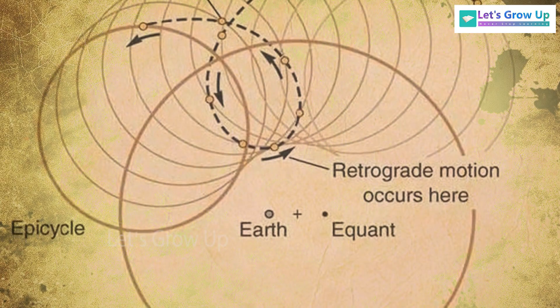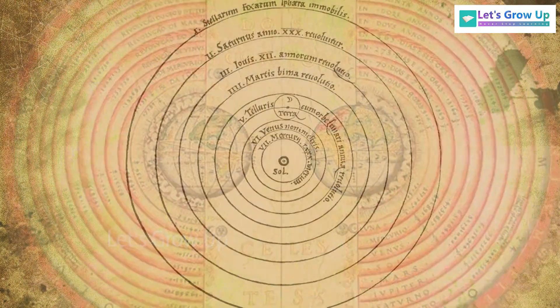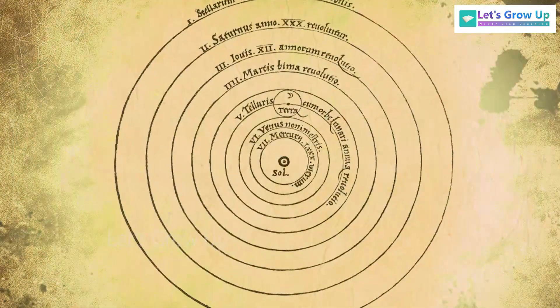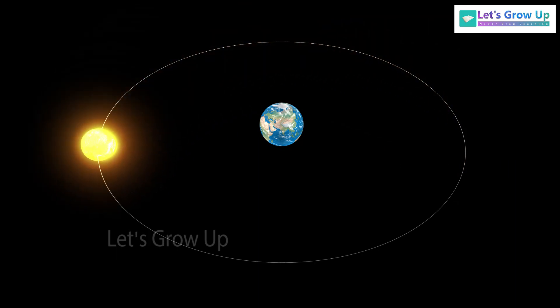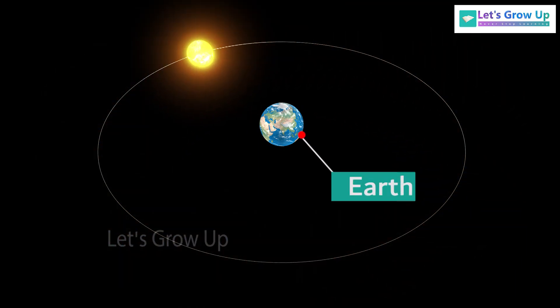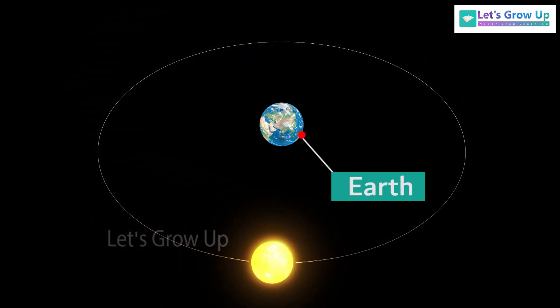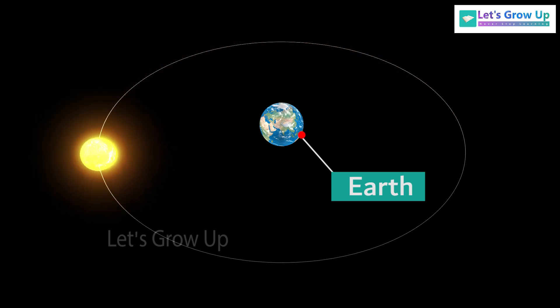This video is going to explain the history of planetary motion. Do you know? The ancient peoples believed that the earth is the center, and the sun orbits around the earth.